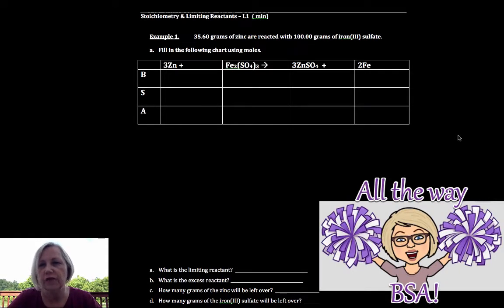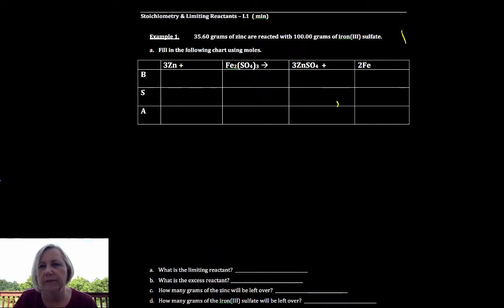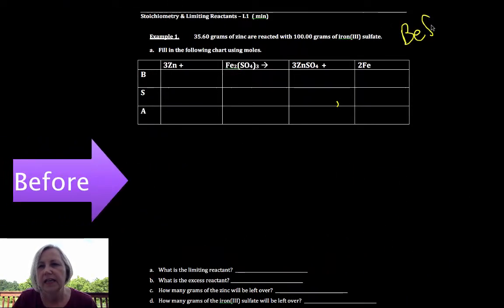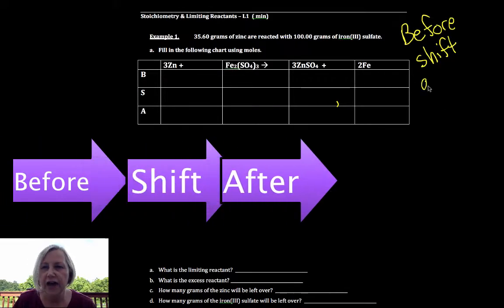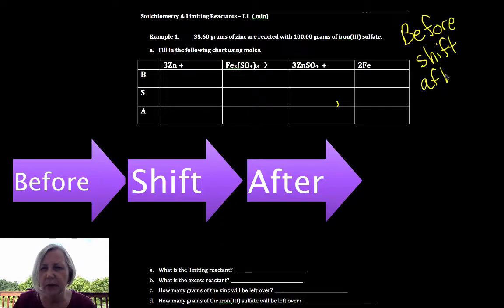B stands for before, so we have got before, and then we have shift. A stoichiometry is assumed to go 100% to product unless somehow specified otherwise, and then A for after. Sometimes you'll see a C there before change after, doesn't really matter.